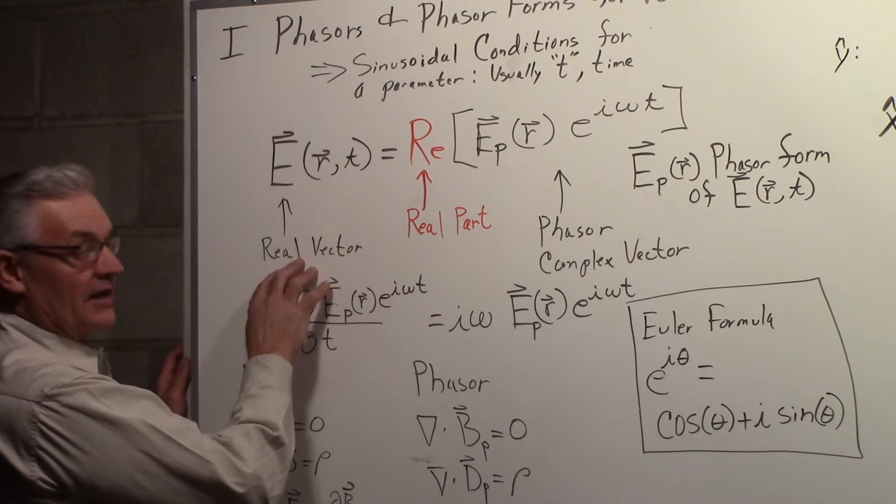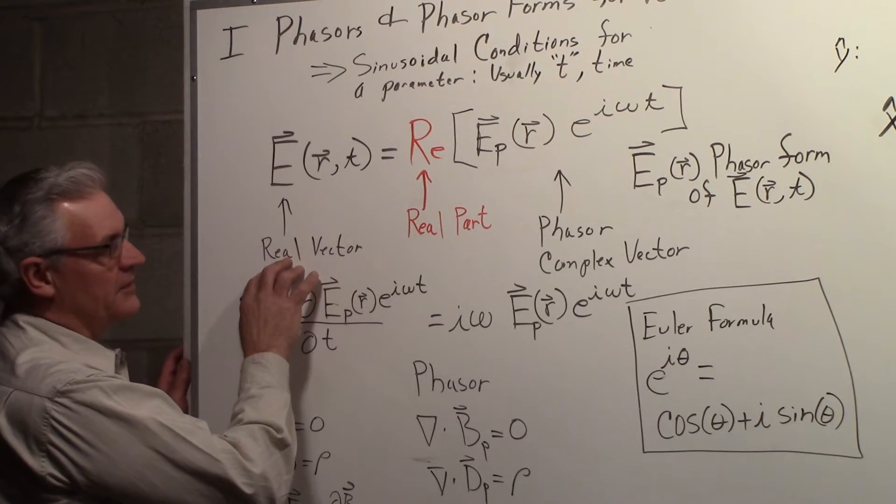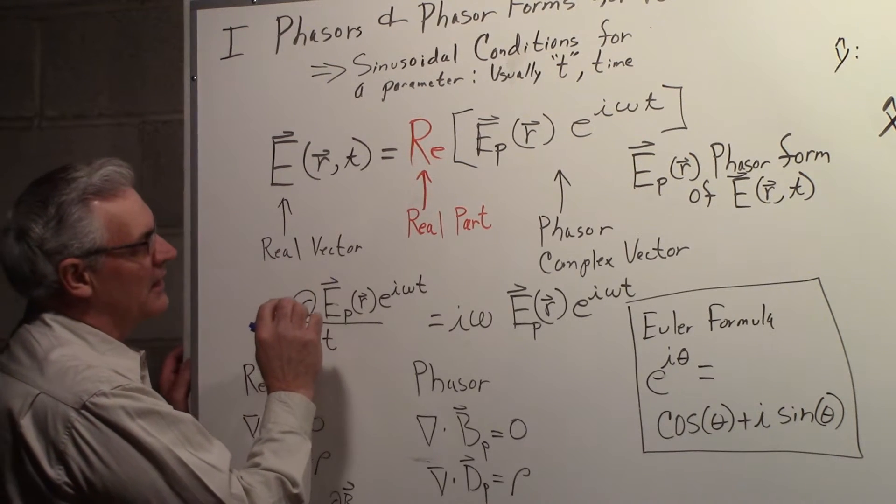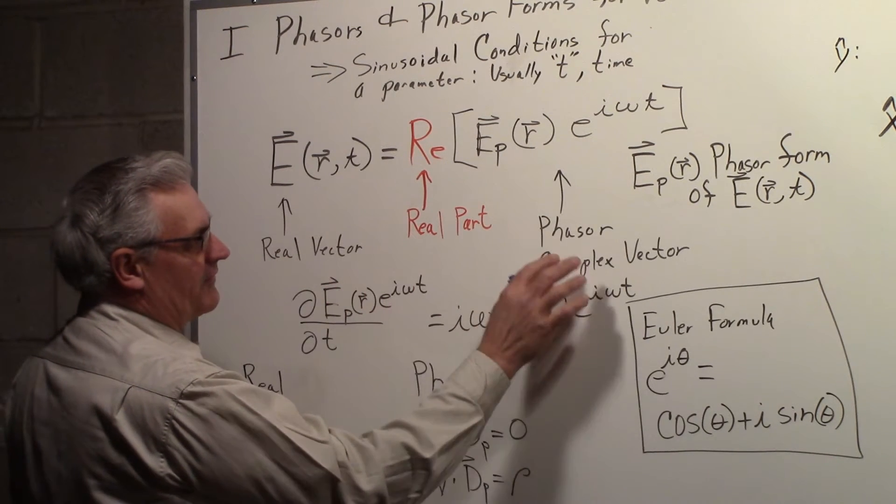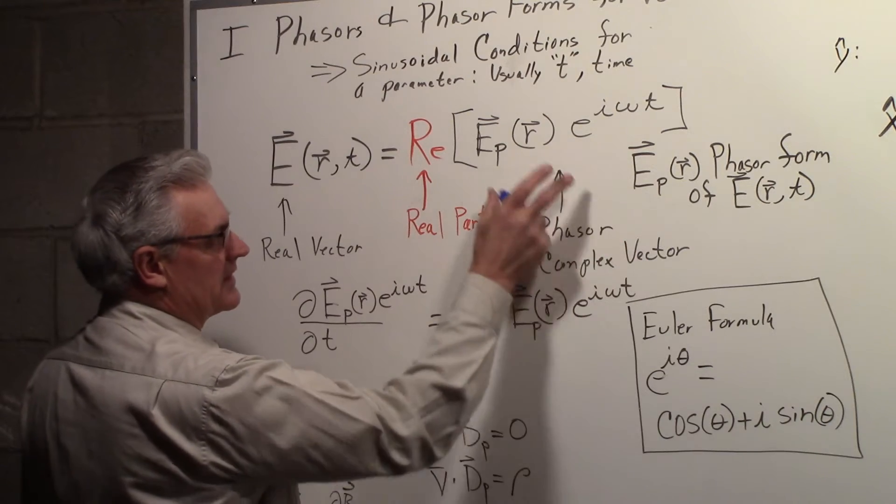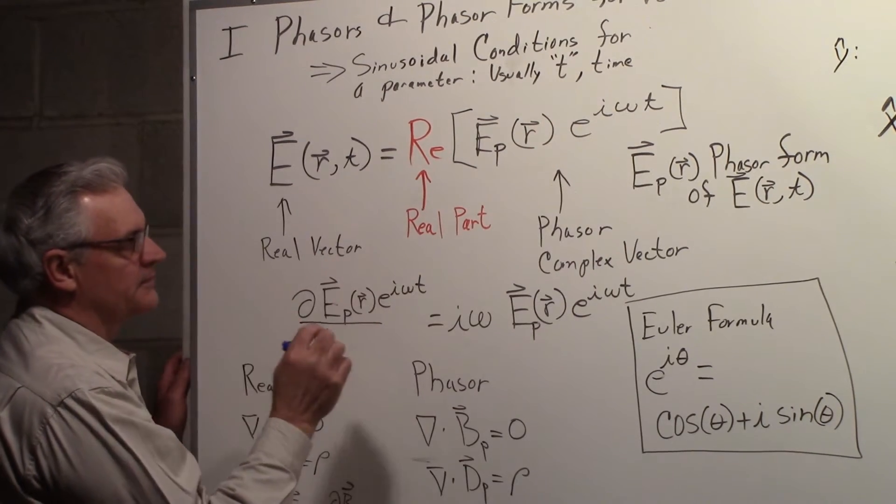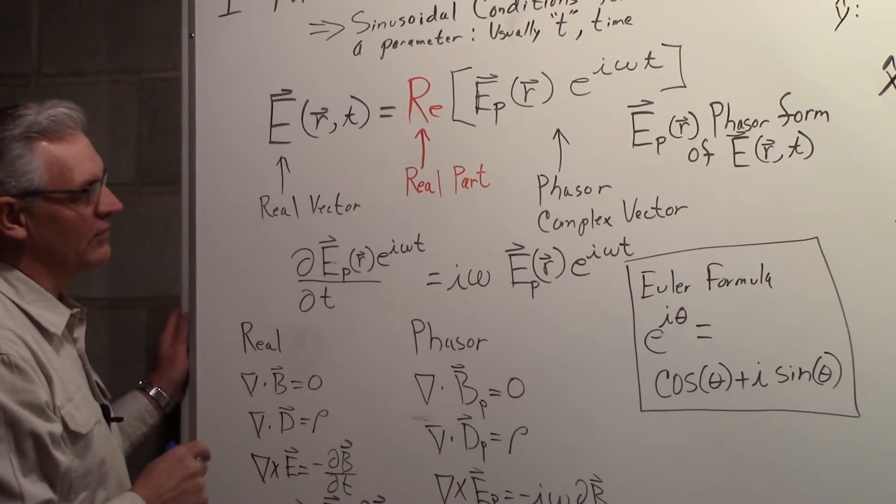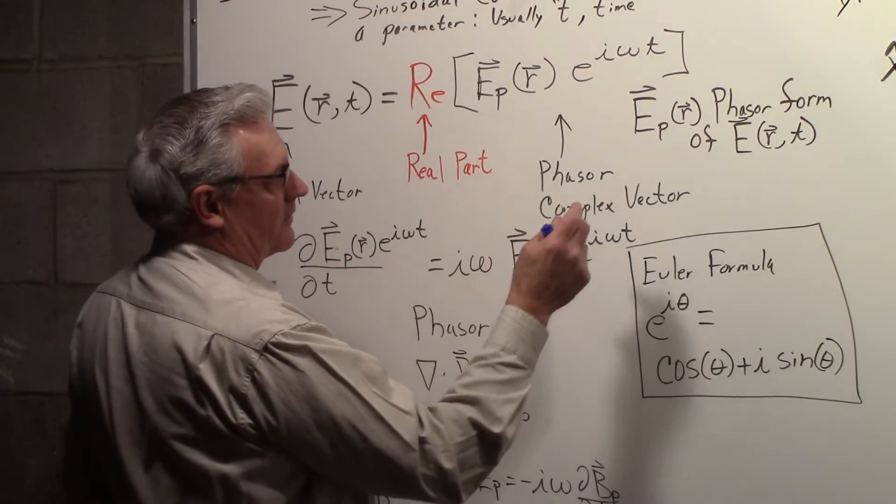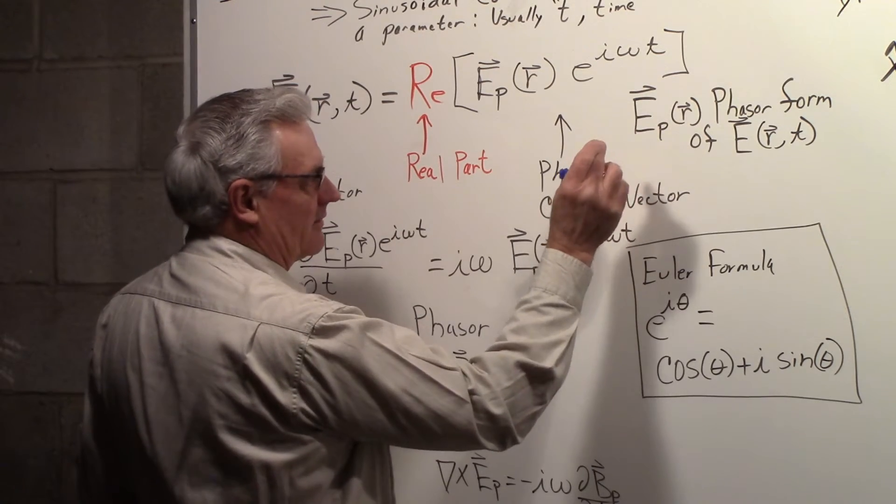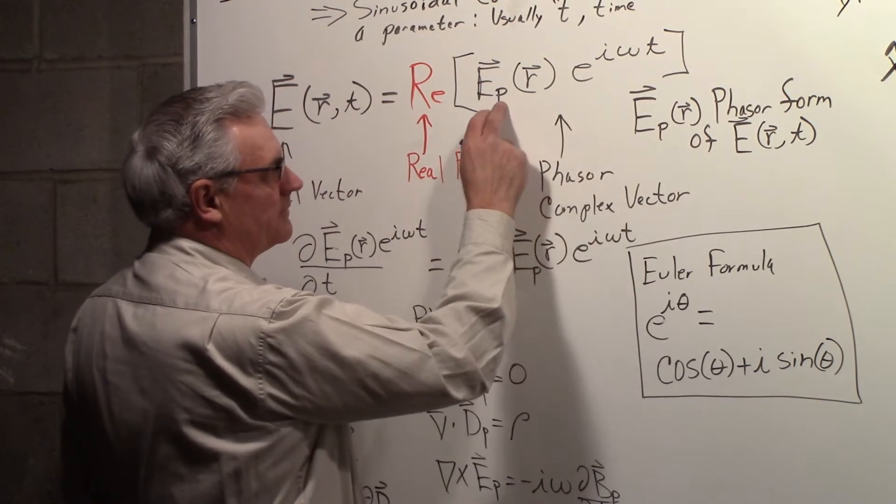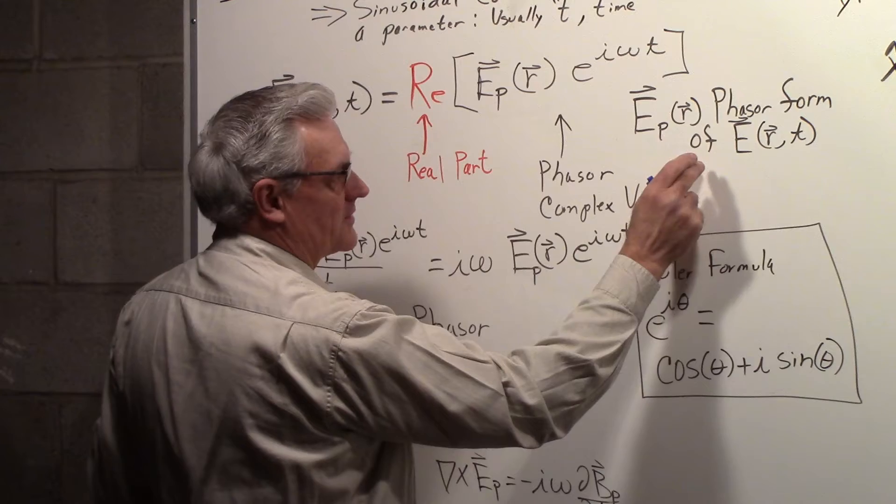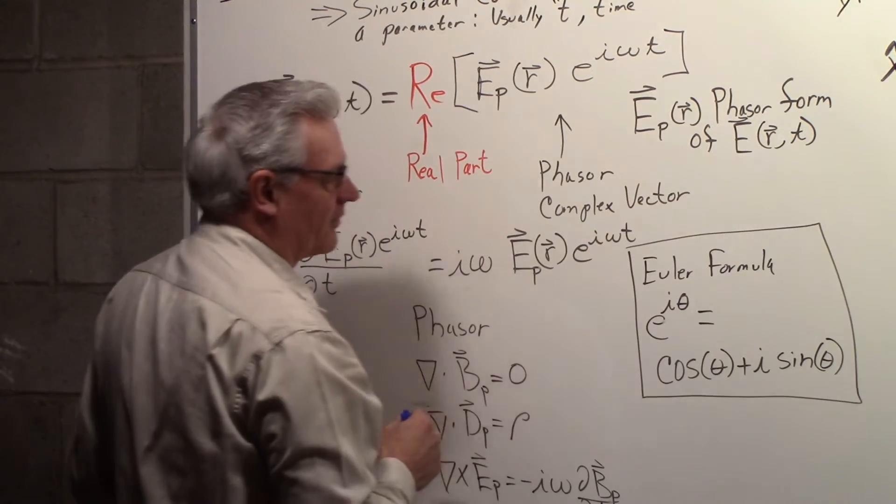So this represents the real vector, the common real vectors we use all the time, and this represents the phasor, or you can look at this as being a complex vector, and we take the real part of that to get the real vector. The little notation that we'll use here is that we'll put a subscript p to indicate the phasor form of the real vector.